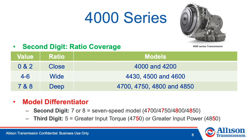The 4000 series offers three gear schemes: close, wide, and deep. A second digit of 0 or 2 indicates close ratio; a 4, 5, or 6 indicates wide ratio; and a 7 or 8 as the second digit indicates deep ratio. When the second digit is a 7 or 8, that also means the transmission is a 7-speed model. The third digit of a 4000 series transmission indicates either greater input torque, like in the 4750, or greater input power, like in the 4850.